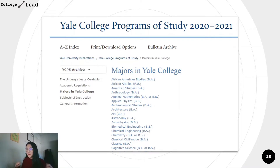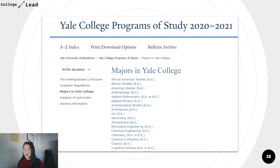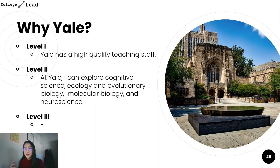Before we continue, try an exercise: write what a level two statement would look like before I move on to the next slide. Pause the video now and take a moment to write what you think a level two statement will look like. A level two statement can look something like this: at Yale, I can explore cognitive science, ecology and evolutionary biology, molecular biology, and neuroscience. Now we're talking more specific.